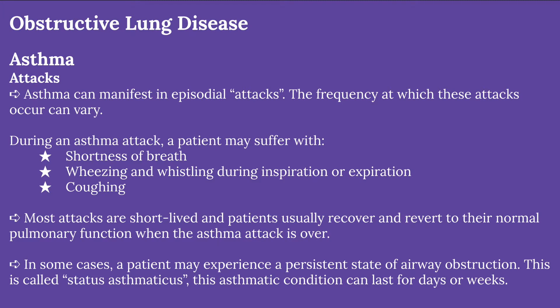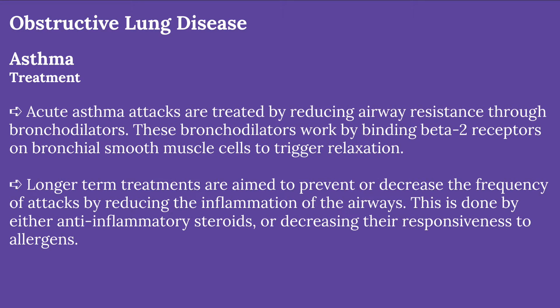Asthma attacks occur in episodes, and how often they occur varies amongst individuals. Attacks consist of shortness of breath, wheezing while breathing in and out, and coughing. Most attacks are acute and the patient usually recovers normal pulmonary function, though in some cases a patient can experience a consistent obstruction of the airways — a condition called status asthmaticus. Acute attacks are treated with bronchodilators that bind beta-2 receptors on bronchiolar smooth muscles to relax the airways. Long-term asthma is usually treated with anti-inflammatory steroids to reduce inflammation and decrease the frequency of attacks.